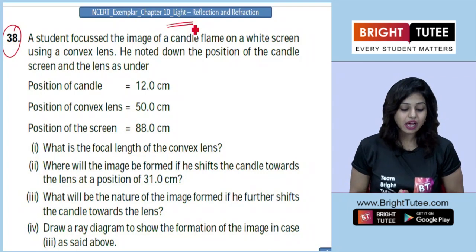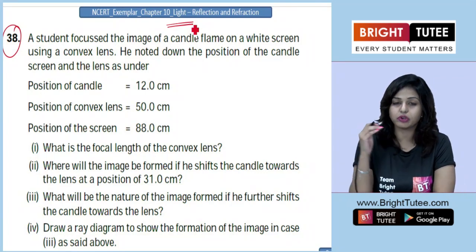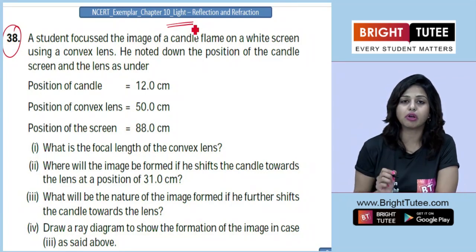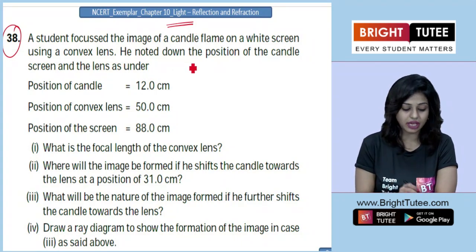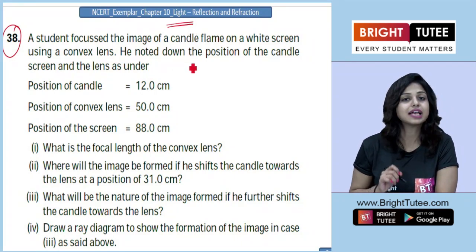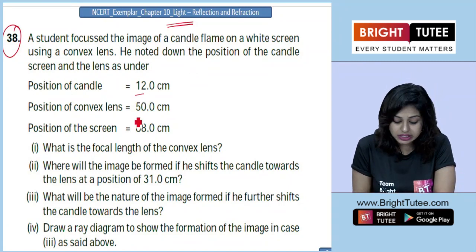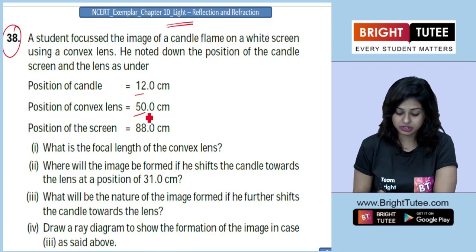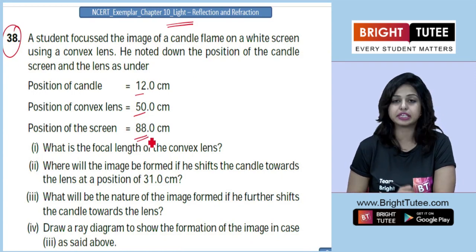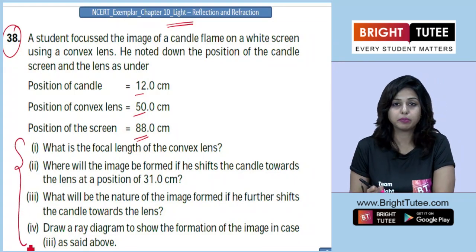The problem reads: a student focused the image of a candle flame on a white screen using a convex lens. He noted down the position of the candle, screen, and lens as follows. The position of the candle is given to be 12 cm, the position of the convex lens is given to be 50 cm, and the position of the screen is given to be 88 cm. There are 4 different parts to this problem.